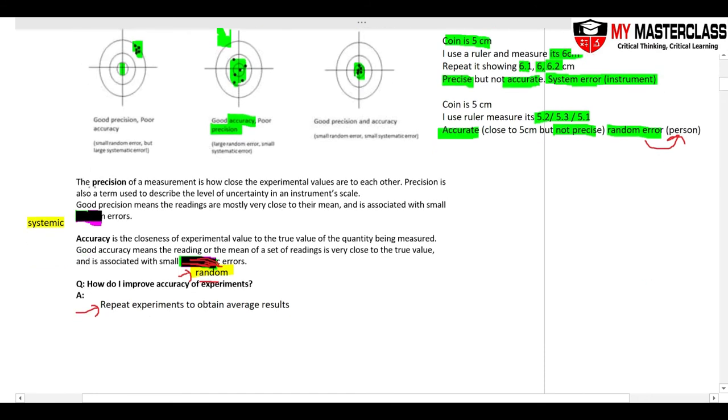Be clear about this definition of precision and accuracy. Precision, the values are close to each other, but they are not accurate. This uncertainty is due to instrument error, like my ruler error. Accuracy is close to the correct value, the true value. They are close to true value but actually quite spread out. So it's accurate but it is not precise, and this kind of error is due to random errors, which is human error.